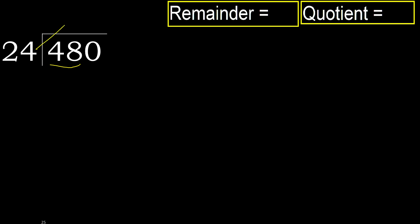24 multiplied by which number is nearest to 48 but not greater? 24 multiplied by 3 is 72, which is greater. Multiplied by 2 — 48 is not greater.